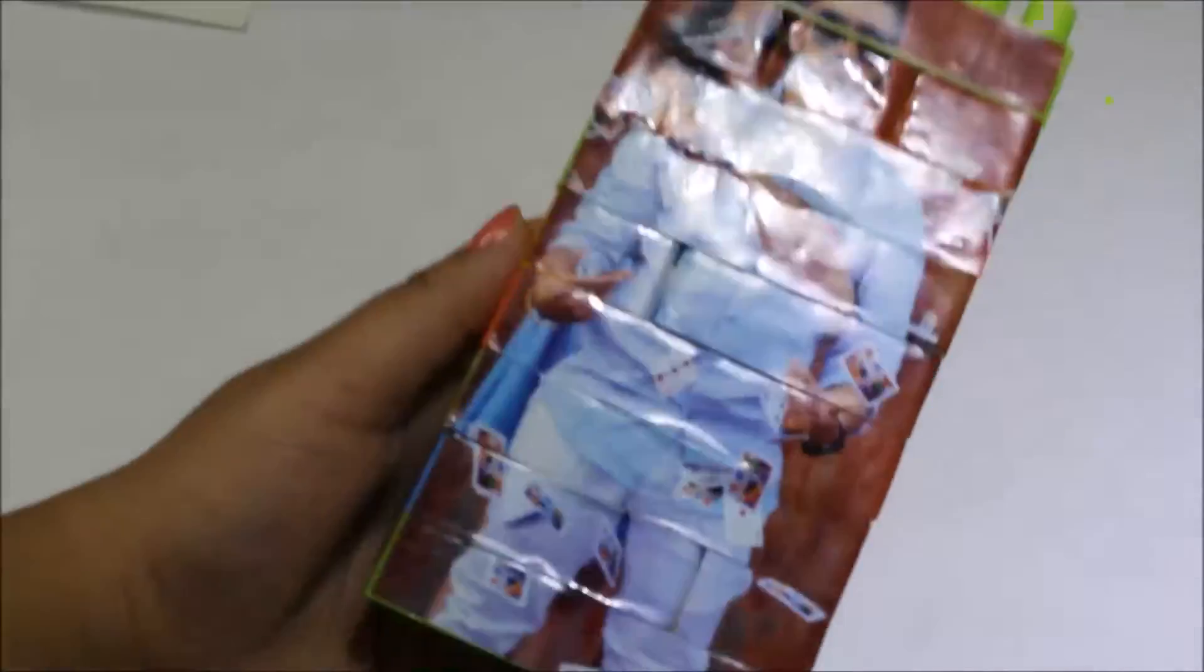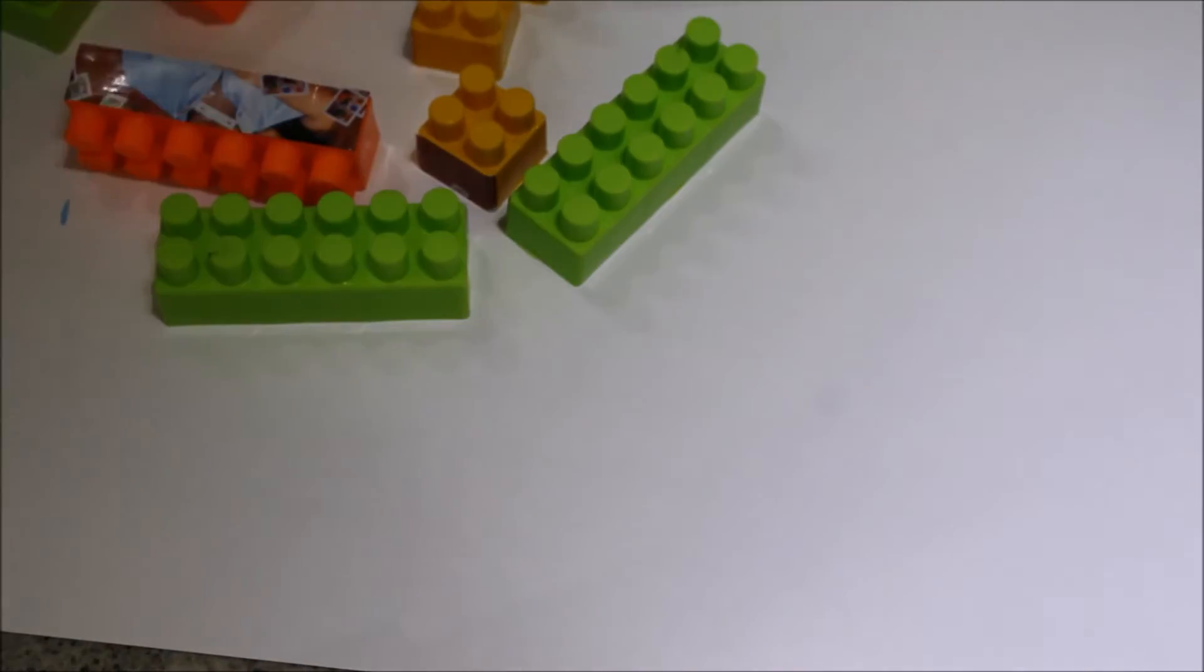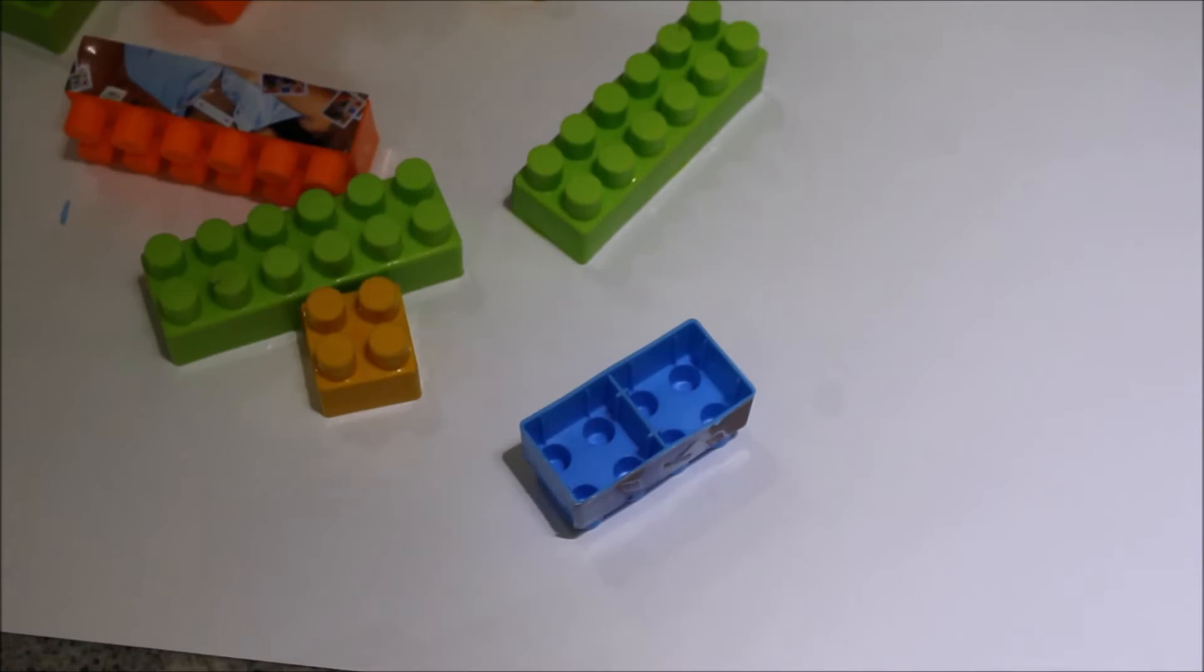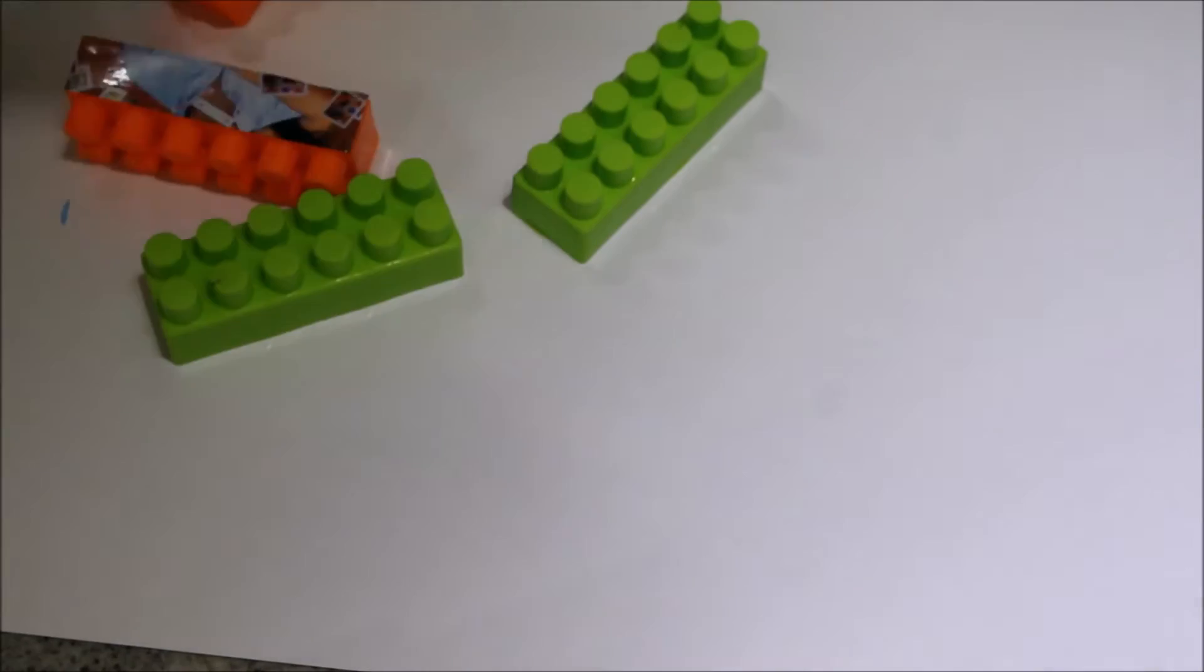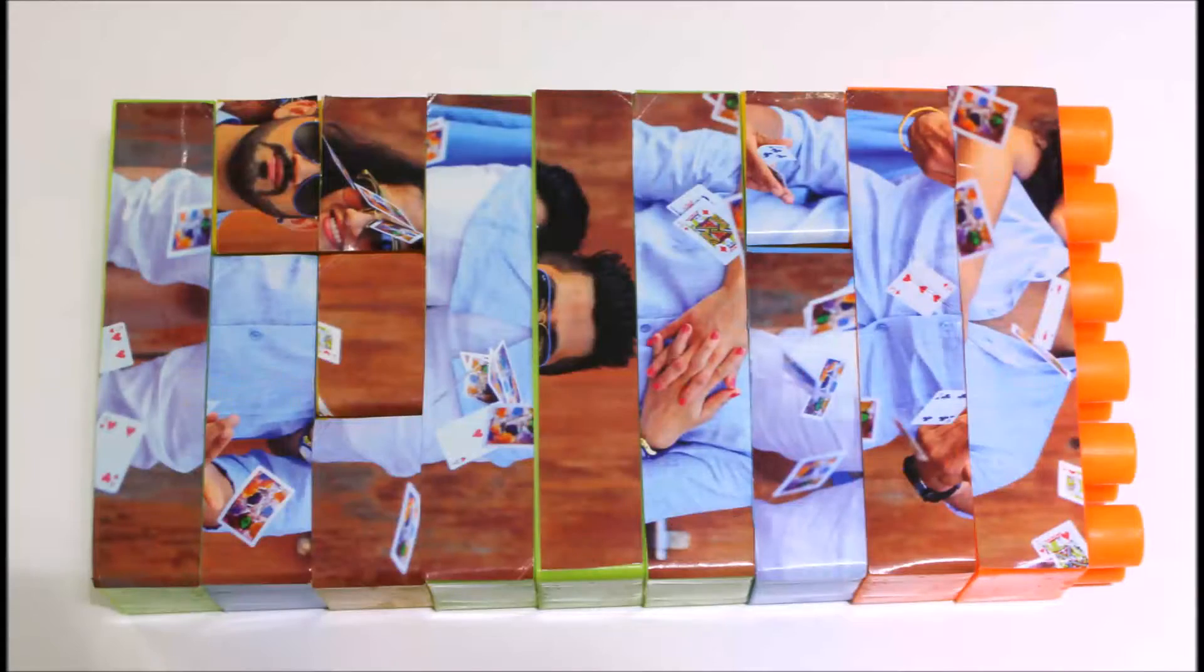Once you're done sticking the complete photograph, this is how it'll look. You can now remove all the pieces and shuffle them in any random order, and then it'll be ready to gift to your loved ones so that they can solve the puzzle. This is how it's gonna look.